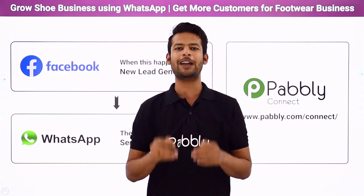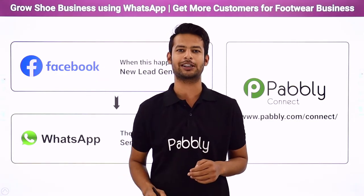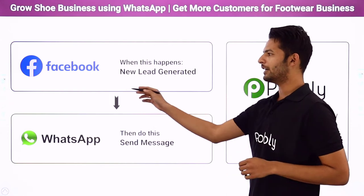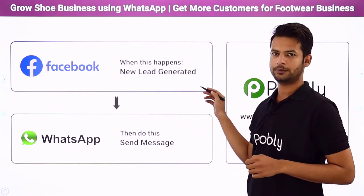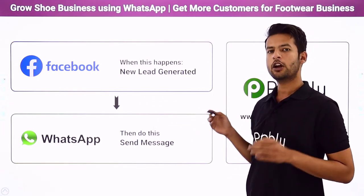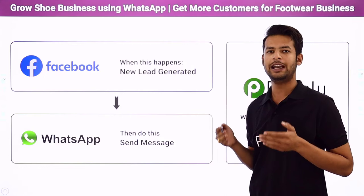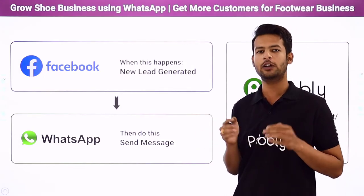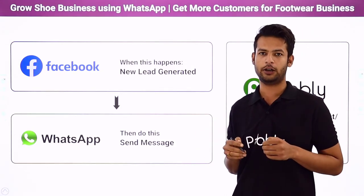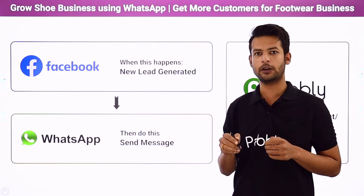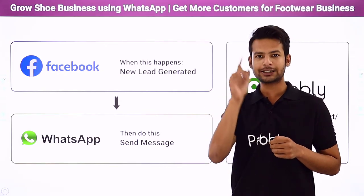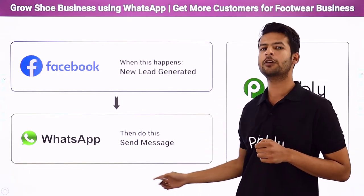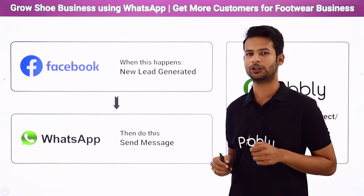So to save your time, I suggest bringing some automation here. You want something like this: you have advertised your store on Facebook, and now whenever a new customer enters your advertisement, automatically a form will pop up in front of them. As soon as they fill up the form, on successful form submission, they will automatically receive a WhatsApp message with the link of the brochure.